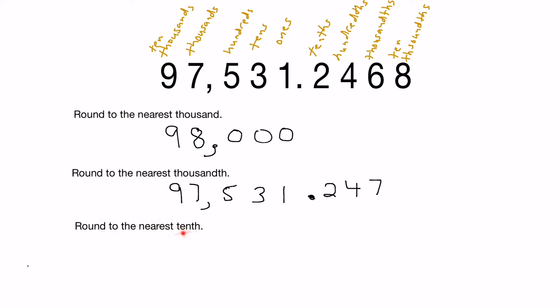Let's round to the nearest tenth. We find the tenths column — it's right here — and put a green box around the tenths digit, which is the 2. We look to the digit immediately to the right: it's a 4, which is less than 5. So we leave this digit as a 2. Anything to the right goes to zero, anything to the left stays the same. Zeros after the decimal point at the end can be removed, so rounded to the nearest tenth is 97,531.2.